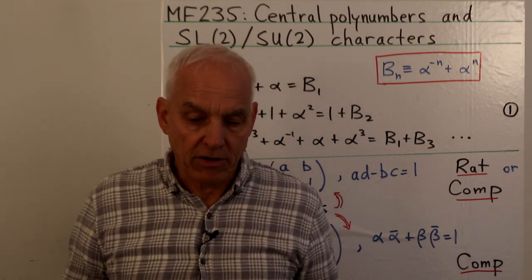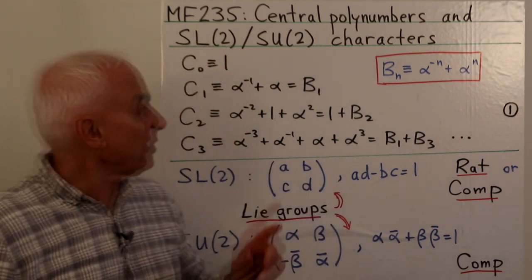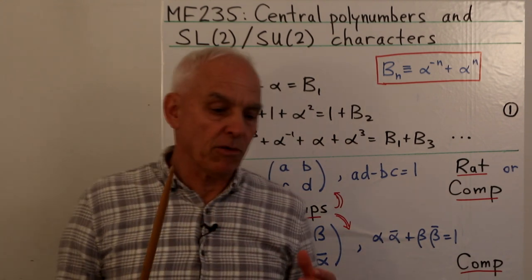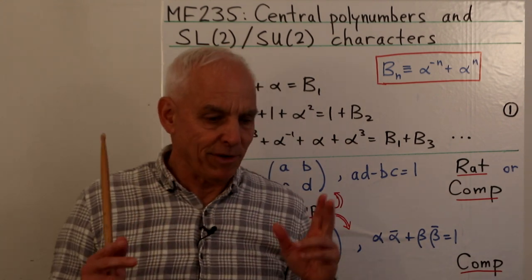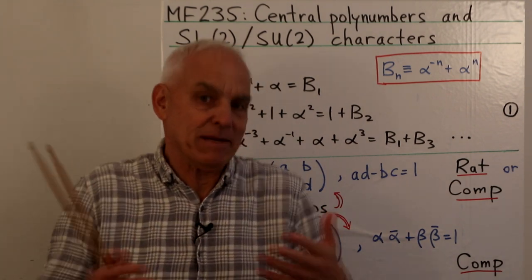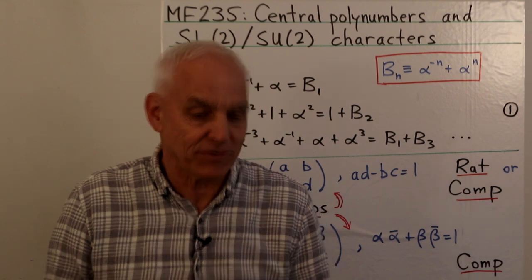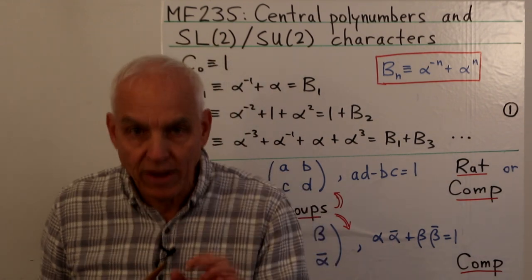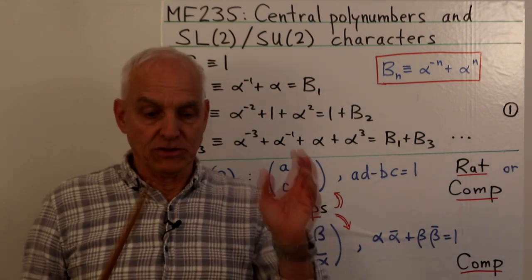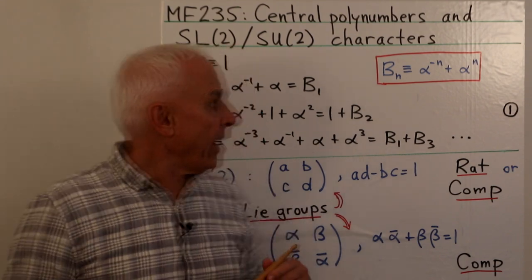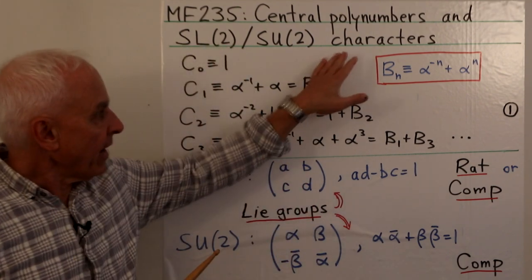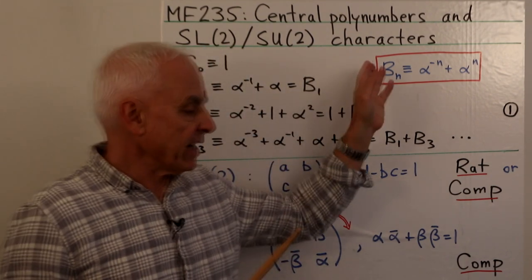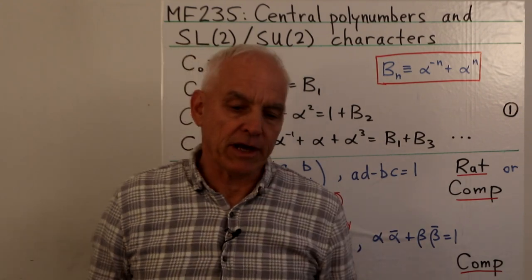This has to do with the characters, particularly of two very simple Lie groups — simple at least in the sense that they're the simplest ones, but still not really very simple — called SL2 and SU2. We're going to talk about them and show how these central polynumbers connect with their characters.